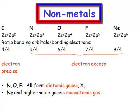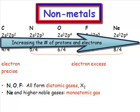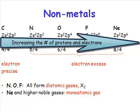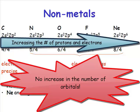Non-metal chemistry. As we move across the periodic table, of course, we're increasing the number of protons and we're increasing the number of electrons. What we are not doing is we are not increasing the number of orbitals.